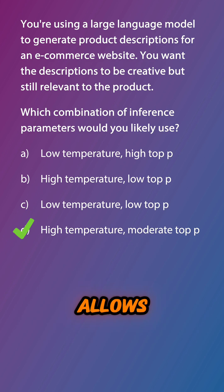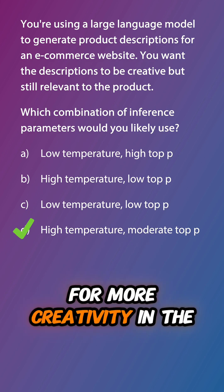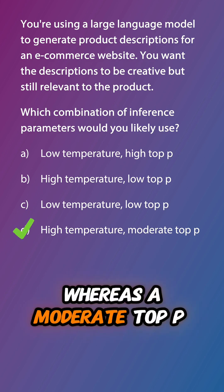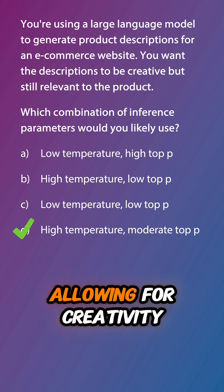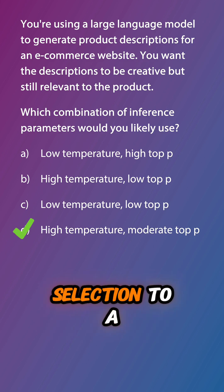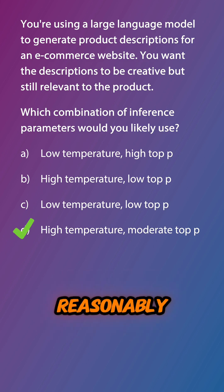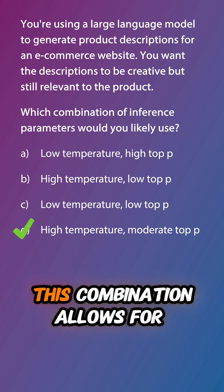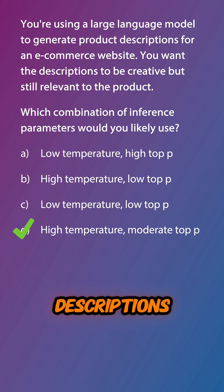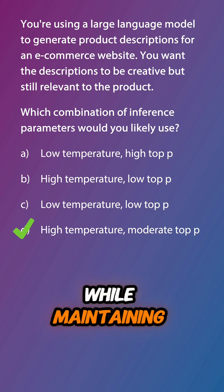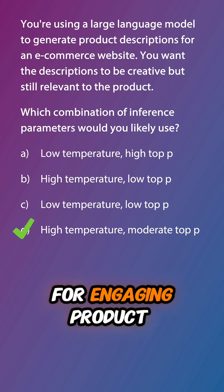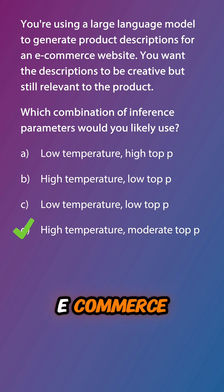High temperature allows for more creativity in the generated descriptions, whereas a moderate top P provides a balance, allowing for creativity while still limiting the selection to a reasonably probable set of tokens. This combination allows for creative descriptions while maintaining relevance to the product, which is ideal for engaging product descriptions in e-commerce.